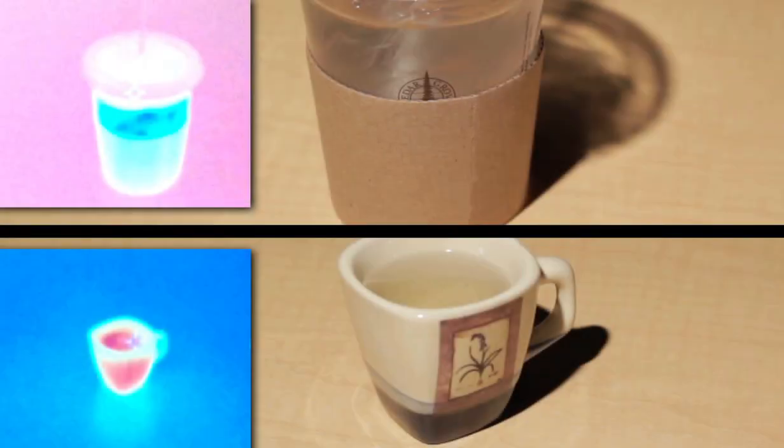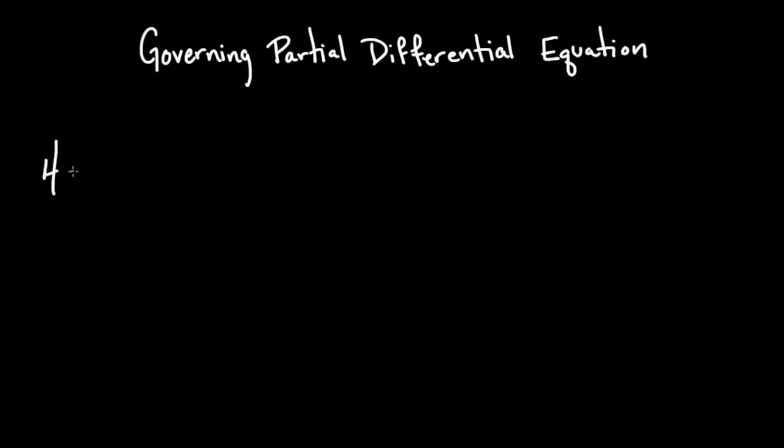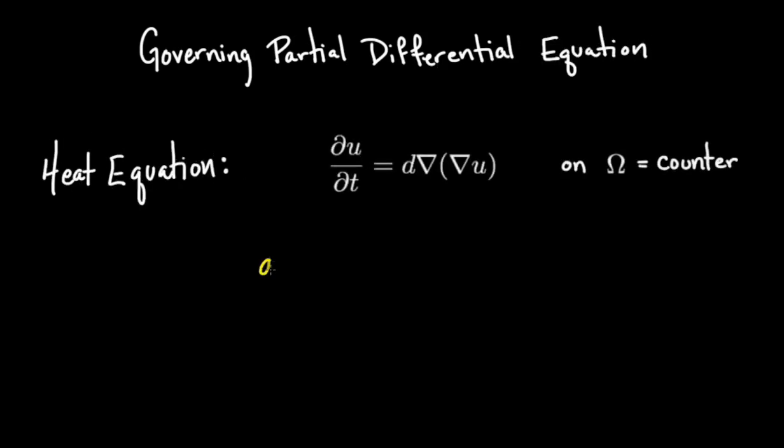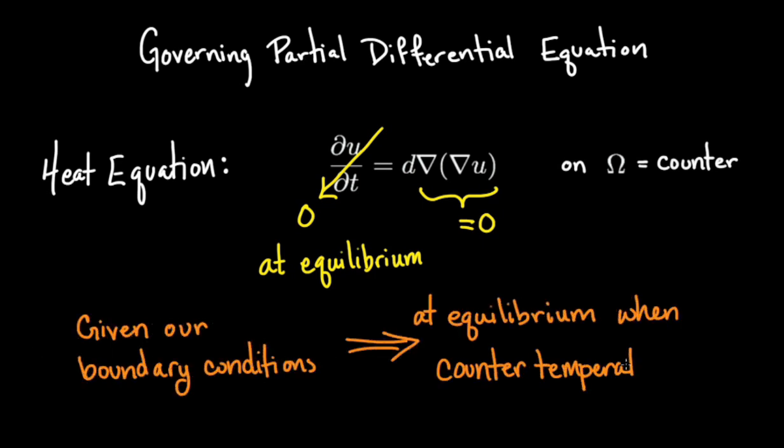Let's look at the iced drink and hot teacup example from the perspective of equilibrium and stability. In this example, the governing partial differential equation is the heat equation, shown here. At equilibrium, the solution of the governing equations is time independent, that is, the partial time derivative is zero. This tells us that the del square temperature term must also be zero, which is only possible given the boundary conditions if the entire counter is at room temperature.